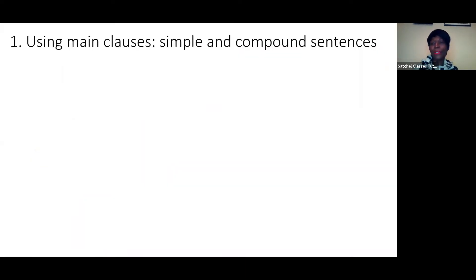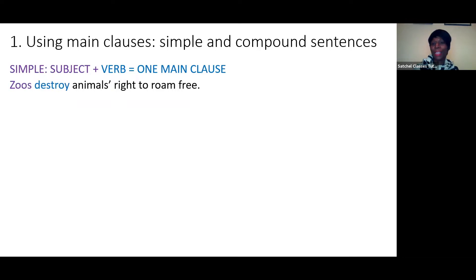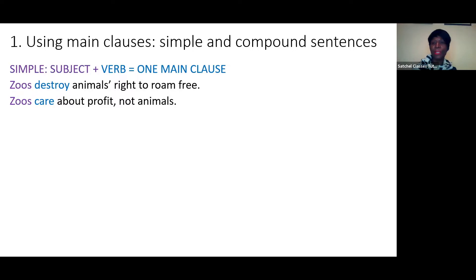Let's start thinking about main clauses, simple sentences, and compound sentences. A simple sentence has one main clause — it has a subject and a verb. For example, 'Zoos destroy animals' rights to roam free.' That's a clear simple sentence, very effective for an opinion piece. Another one: 'Zoos care about profit, not animals.' And a third: 'Zoos do not protect newborn animals.' That's really tugging at the heartstrings using emotive language. All of these simple sentences are really effective and absolutely fine for opinion writing.